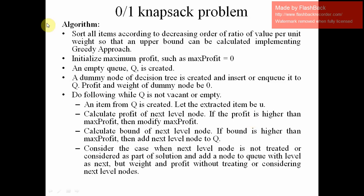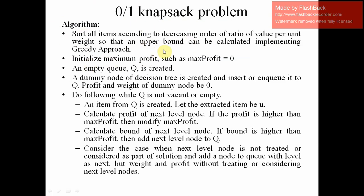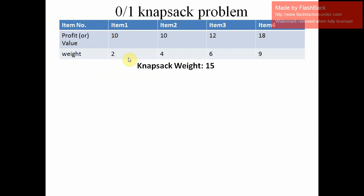How are we going to solve it? We are going to solve it using this algorithm. First, we have to sort all the items according to their value-to-weight ratio. This is the problem we are going to solve, and the items have already been aligned according to the ratio. We sort by ratio because we are going to find the upper bound, which will initially be calculated by the greedy approach.